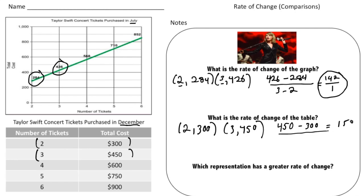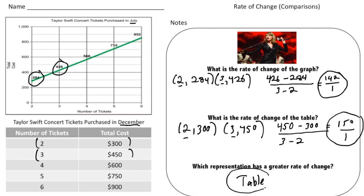We put that over the change in X, which is 3 take away 2, giving us 1. So the rate of change of Taylor Swift tickets in December is $150. Obviously it's a better time to buy them in July than in December. The table has the greater rate of change. The next page is the problem I want you to try — pause the video, then hit play to see how you did. Good luck.